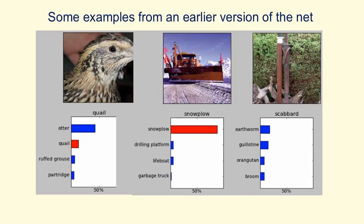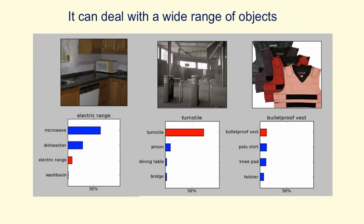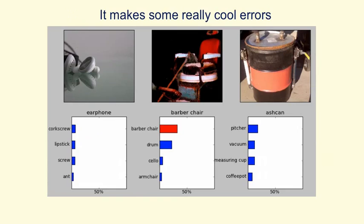It can, however, deal with a wide range of different objects. On the left, I would have said microwave as my first answer, but the correct answer is electric range and it does get it in its top five. In the middle, it's getting a turnstile, which is a distributed object — it can do more than just recognize compact things. It can also deal with pictures as well as real scenes, like the bulletproof vest. And it makes some very cool errors: the image on the left is an earphone, but its fourth guess is an ant. Looking carefully, you can see it's a view of an ant from underneath — the eyes are looking down and you can see the antennae. For the image on the right, it doesn't get the right answer, but all of its answers are cylindrical objects.